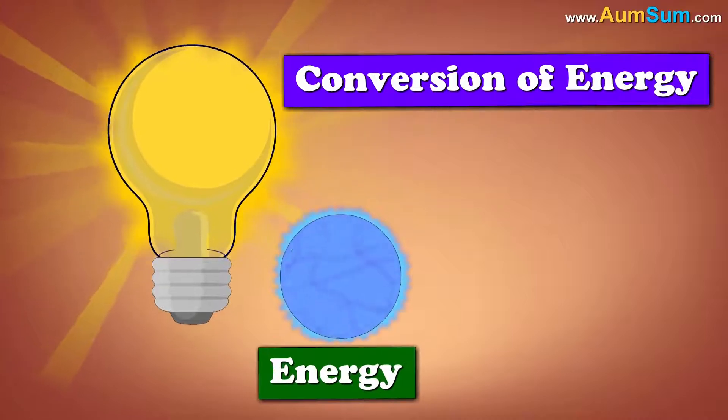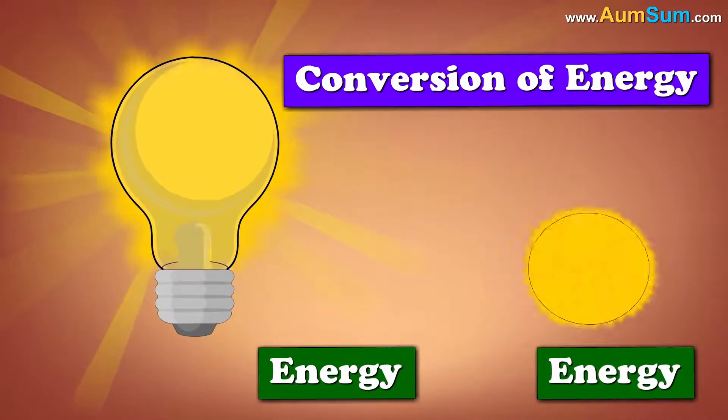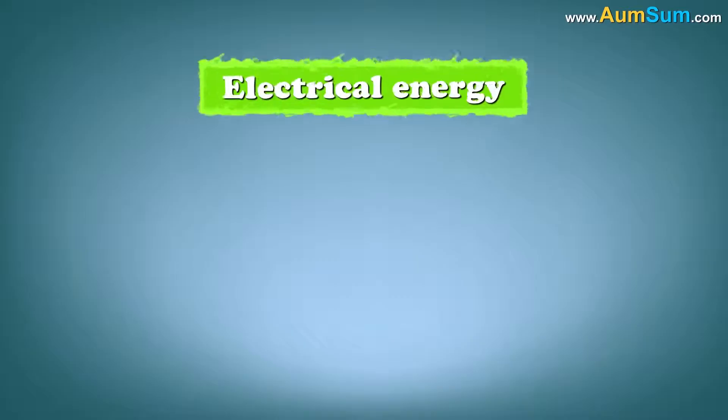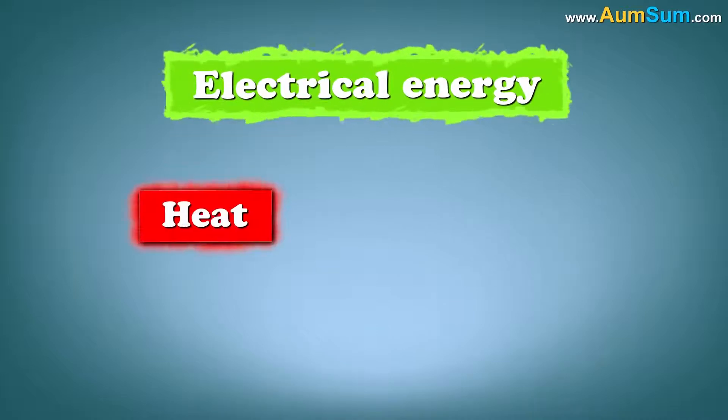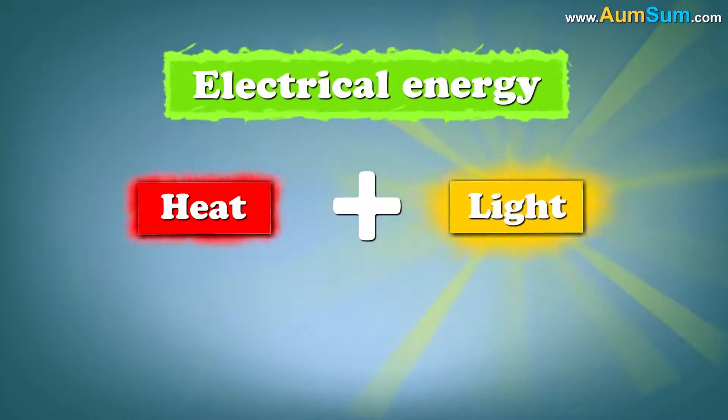Which states that energy is converted from one form to another. In this case, electrical energy is converted to heat plus light. Let us see how this happens.